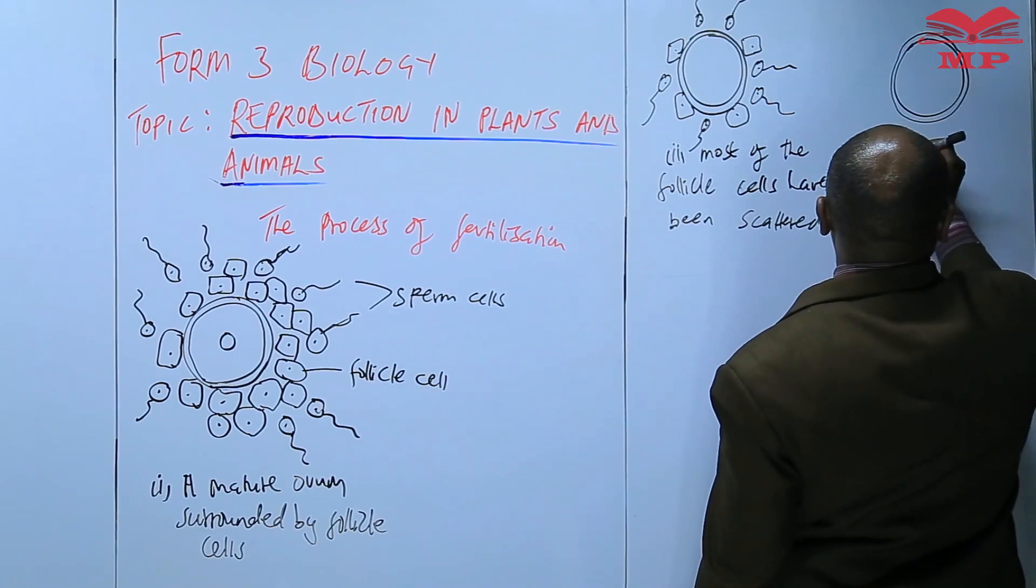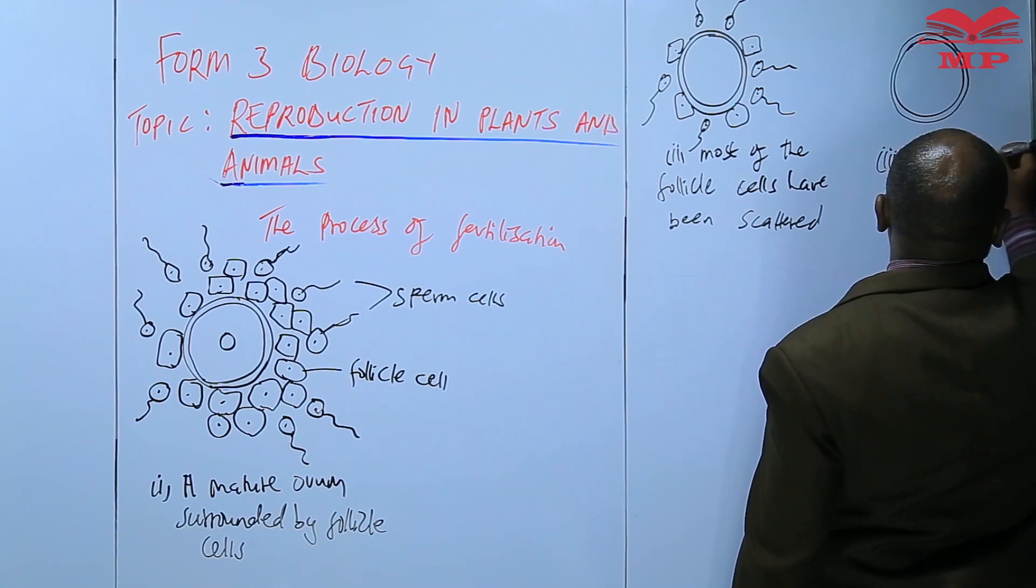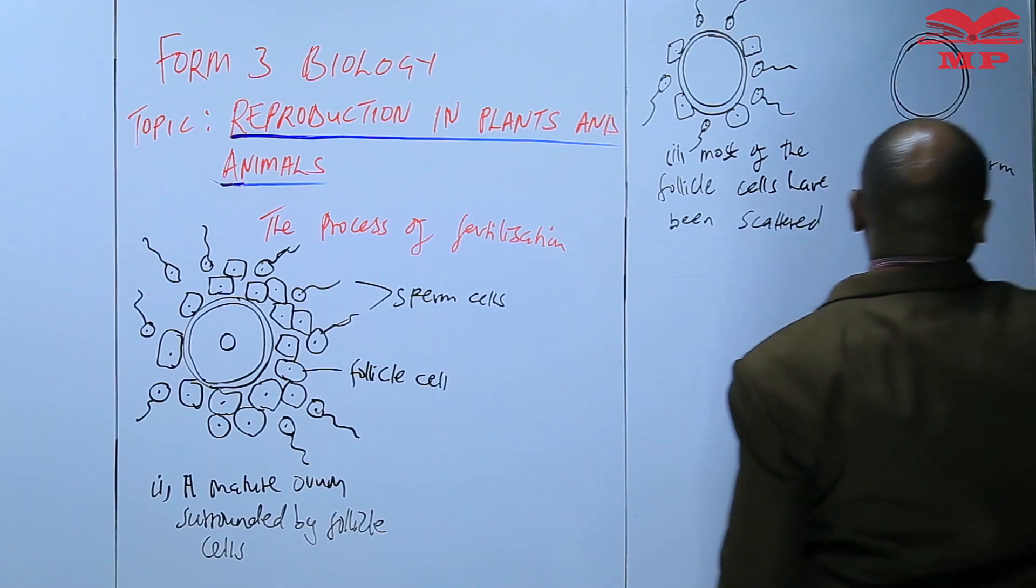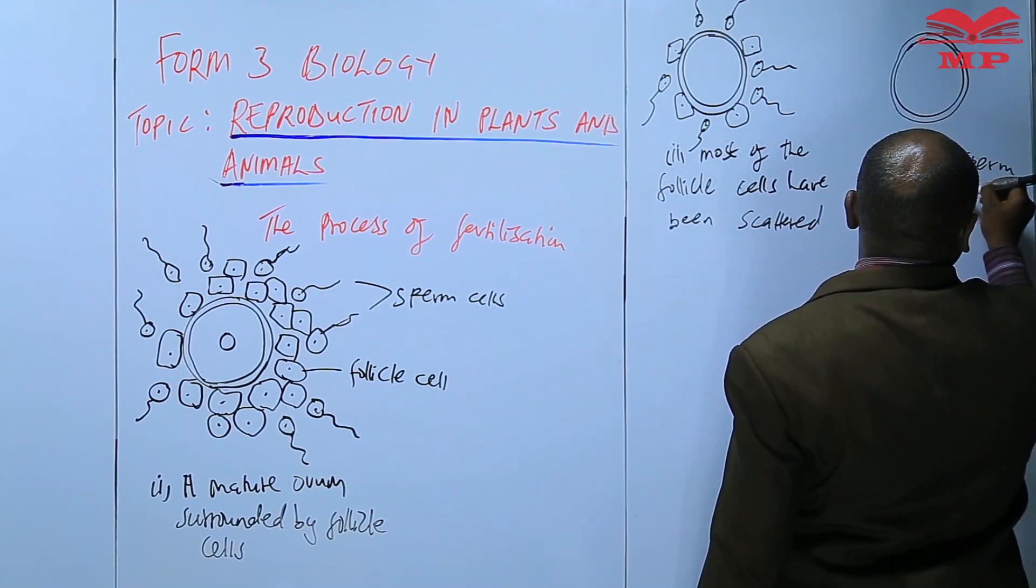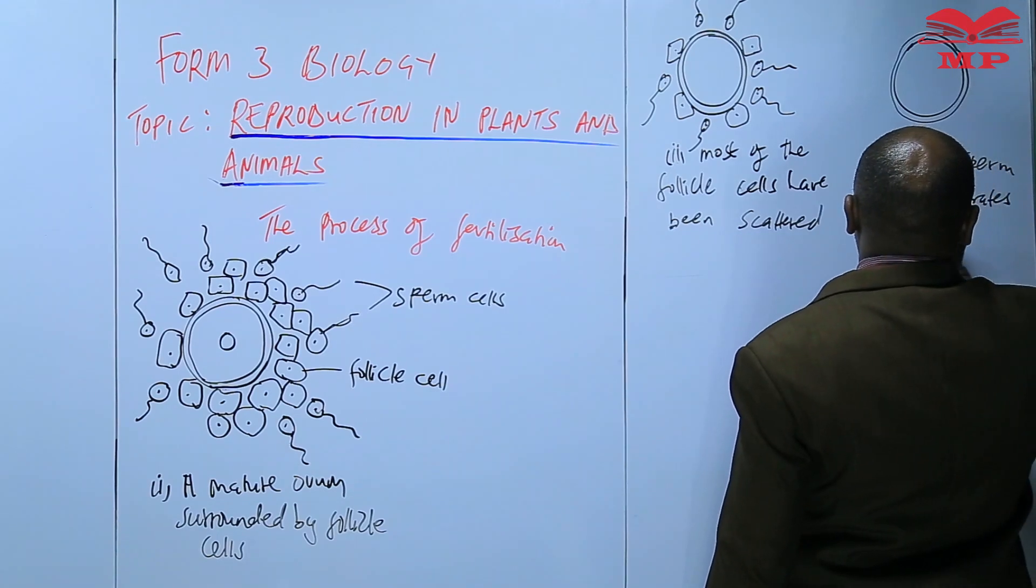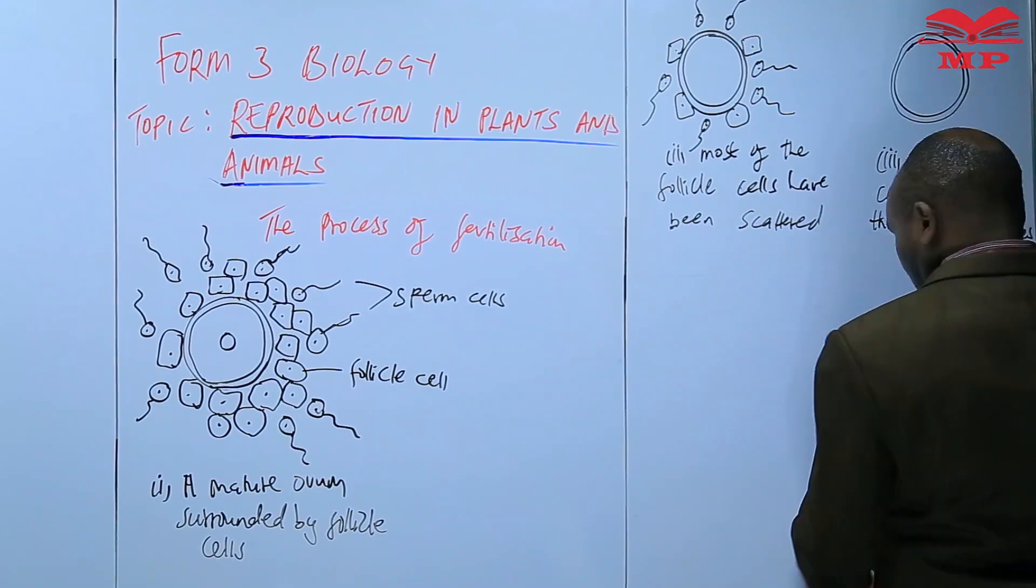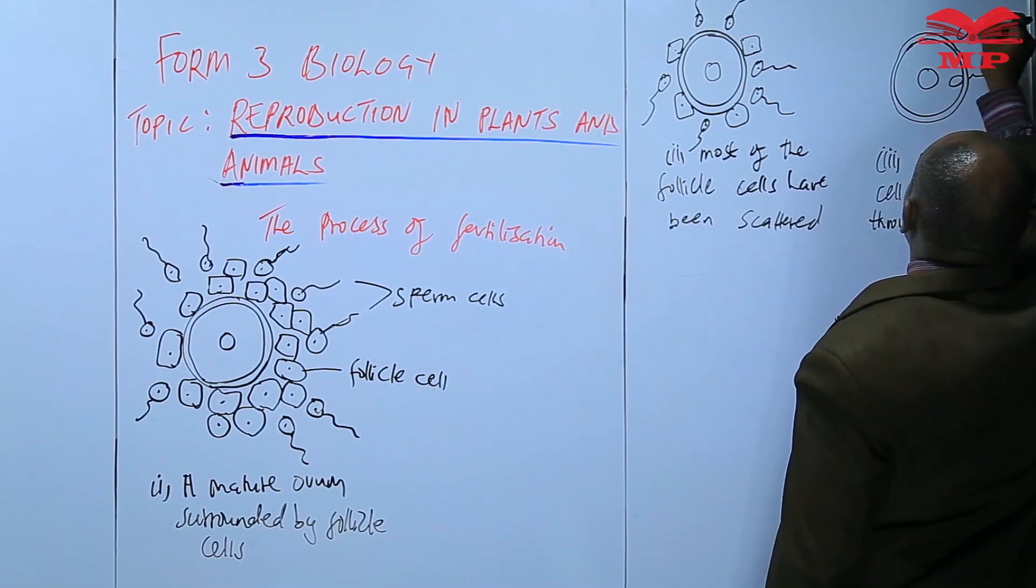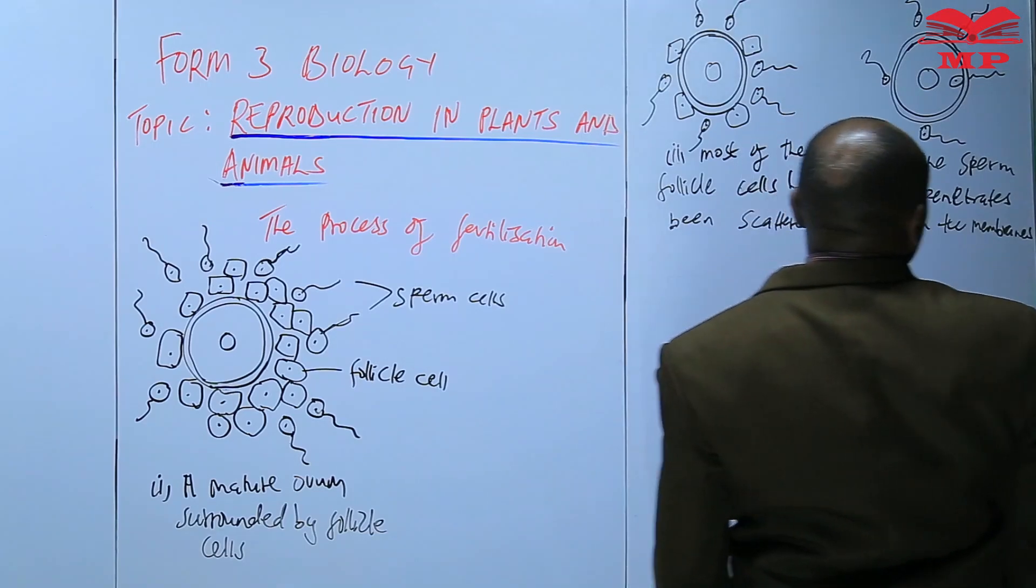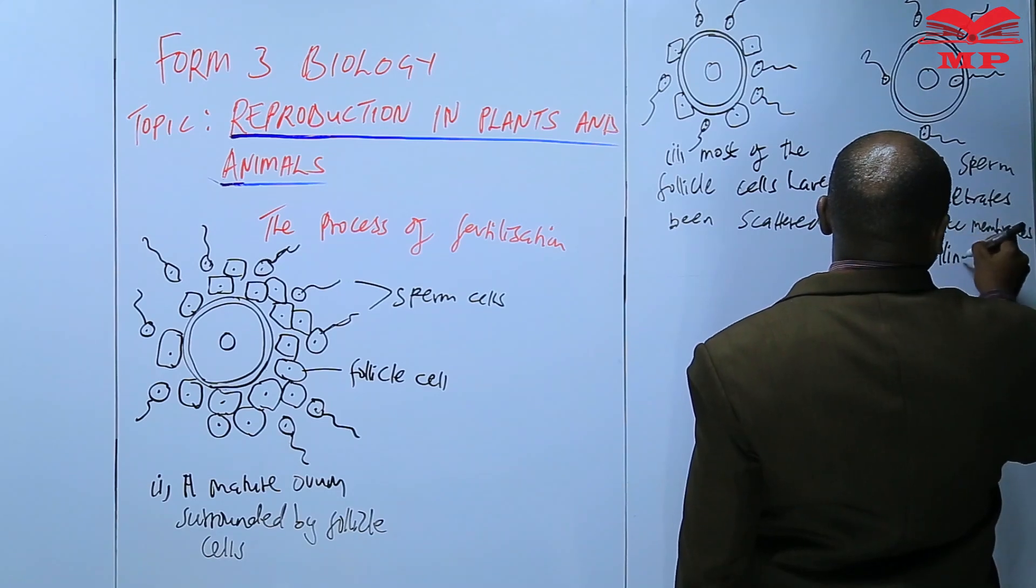Then the third diagram is that there is one sperm cell penetrates. Once the sperm cell penetrates through the membranes, the vitaline membrane hardens.